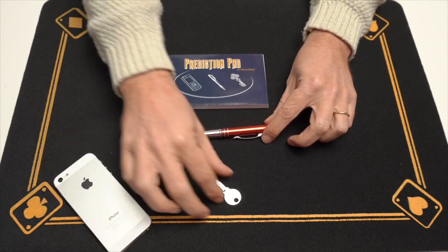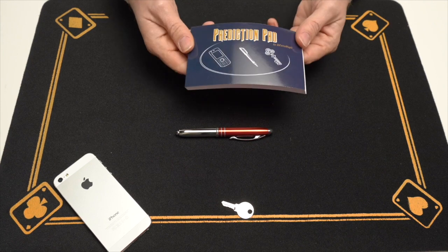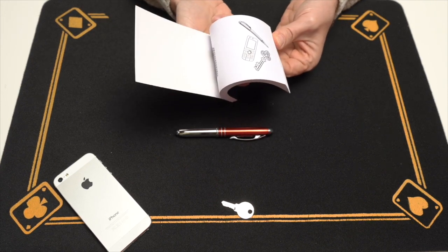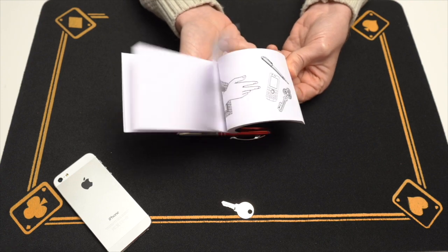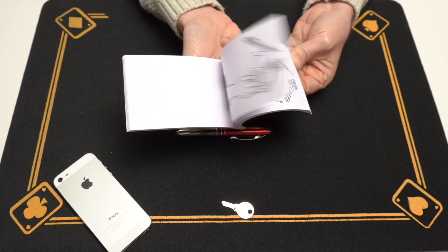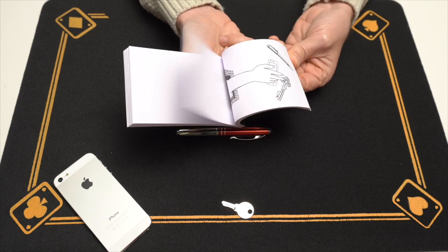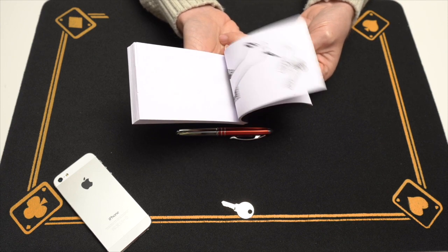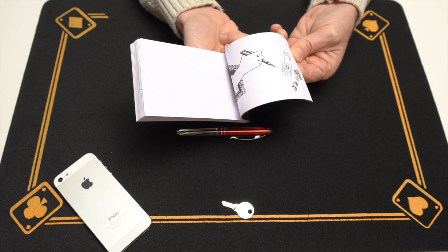This is your choice. Now, as I said, inside this pad there is a prediction. Look carefully. There are three objects and a hand that comes out of a window. This hand moves over the three objects and at the end chooses one object, and it is the pen that you chose. Wow. Fantastic.